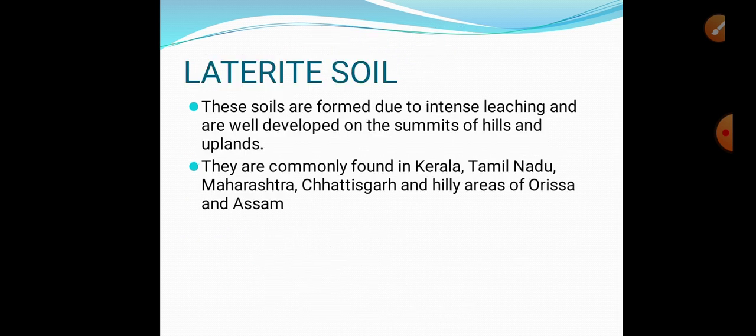Another soil type is laterite soil. These soils are formed due to intense leaching and are well developed on the summits of hills and uplands. They are commonly found in Kerala, Tamil Nadu, Maharashtra, Chhattisgarh, and hilly areas of Orissa and Assam — mostly in mountainous regions.